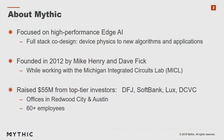Thank you for the introduction. Mythic is a high-performance edge AI startup looking at applications like computer vision that require a very large amount of computation. We do this using analog computing and embedded flash, doing full-stack co-design from device physics all the way up through algorithms and applications. The company was founded by Mike Henry and myself in 2012 as visiting scholars at the Michigan Integrated Circuits Lab. Since then we've raised $55 million from investors like DFJ, SoftBank, and Lux. We have two offices — Redwood City and Austin — and currently 60 employees and growing.